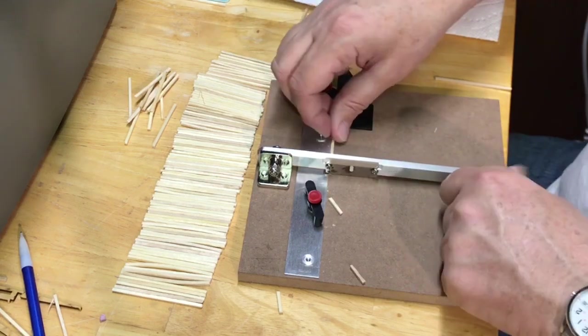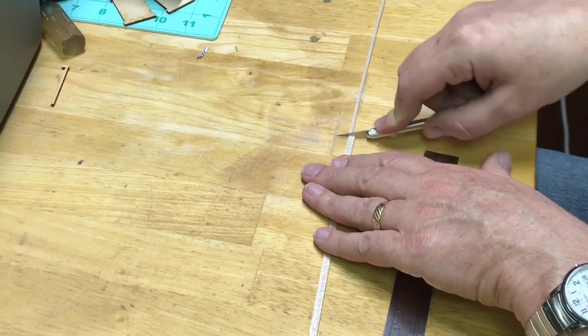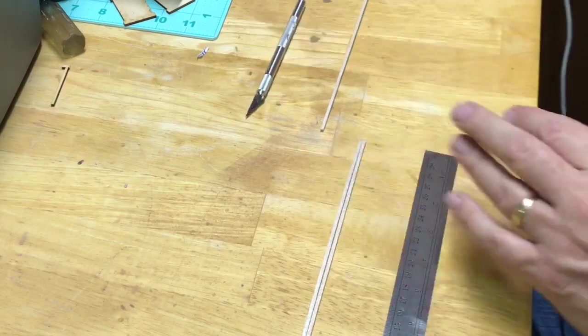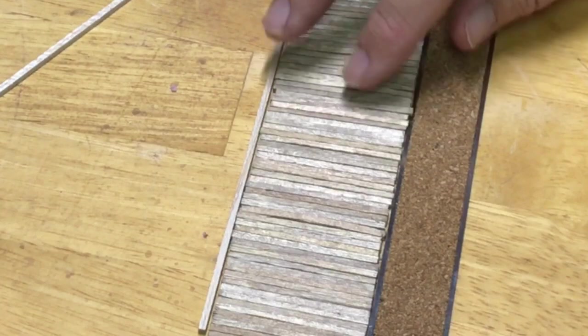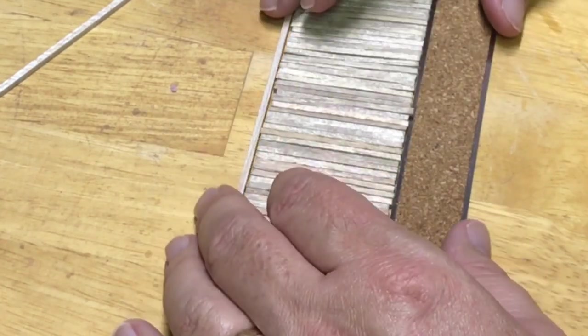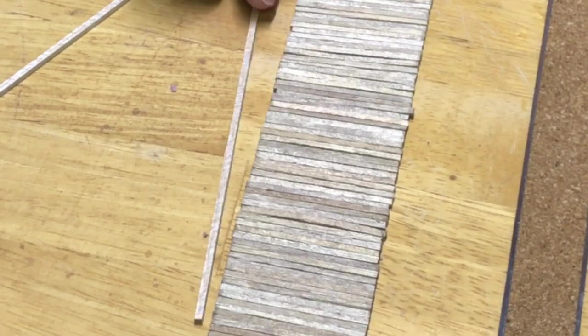In order to make the roadbed I used the micro mark chop it again to cut about a million pieces of wood, and then I proceeded to line them up and pull out the pieces that were crooked or somehow were damaged.